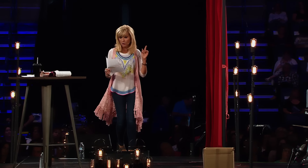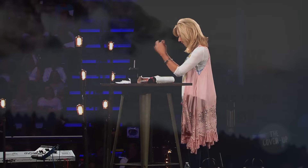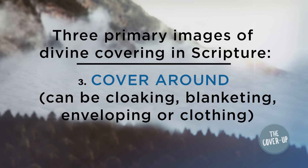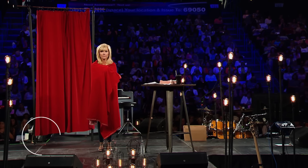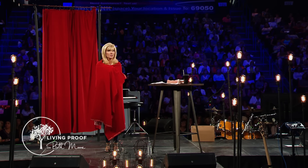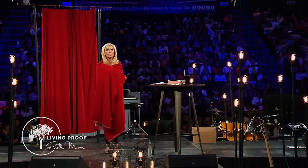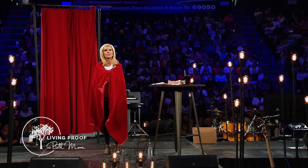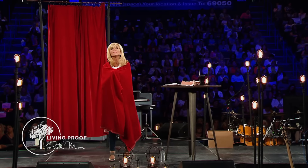The third image is a cover around — the individual himself or herself out in the elements, covered all around. So all three types appear in scripture: a shelter over our heads from a storm raging around us; sometimes something veiled in front of us; and other times right out in the midst of it, covered by God.